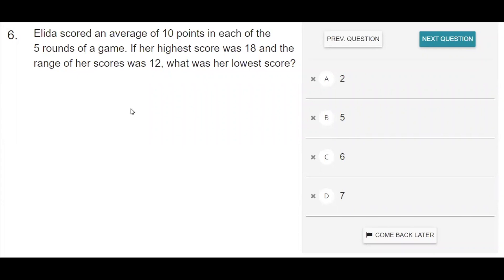Elida scored an average of 10 points in each of the five rounds of the game. If her highest score was 18 and the range of her scores was 12, what was her lowest score? If we remember from statistics,